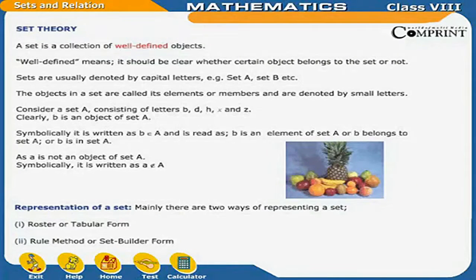Chapter 4: Sets and Relations. Set Theory — a set is a collection of well-defined objects. Well-defined means it should be clear whether a certain object belongs to the set or not. Sets are usually denoted by capital letters, for example, set A, set B, etc.